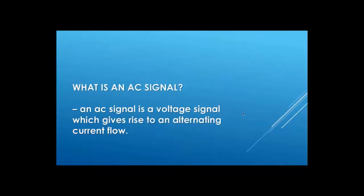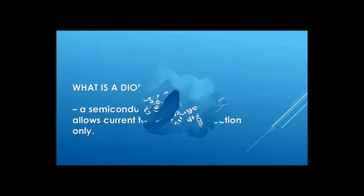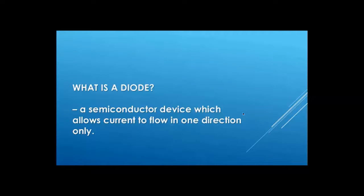So first of all, let's define what an AC signal is and talk a little about what a diode is. An AC signal is a voltage signal which gives rise to an alternating current flow. And a diode is a semiconductor device which allows current to flow in one direction only. In this video, we'll be looking at what happens when the AC signal which changes direction flows through a diode.